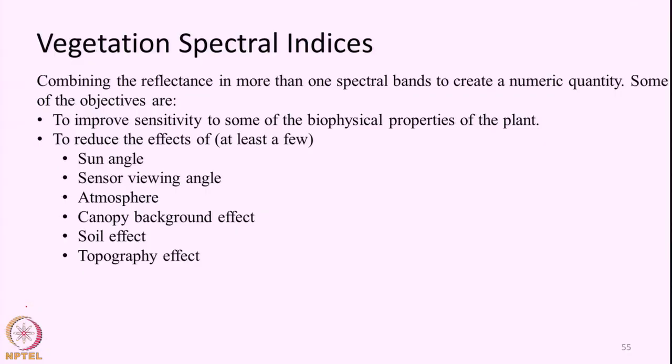With this we end the spectral properties of snow. The next topic we are going to enter is what is known as spectral indices, or more commonly known as vegetation indices. I prefer to use the term spectral indices because nowadays such indices are being developed and used not only for studying vegetation but also for various other features on the earth surface. When we talk especially about vegetation, we may use the term vegetation indices.